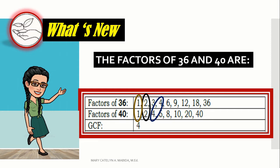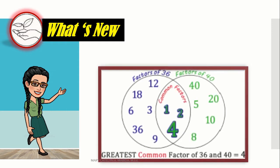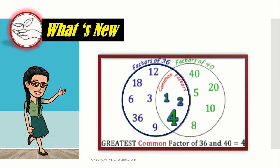Now, another way of writing factors of 36 and 40 is by using a Venn diagram. The factors or the numbers inside the blue circle are factors of 36 and the numbers inside the yellow circle are factors of 40.